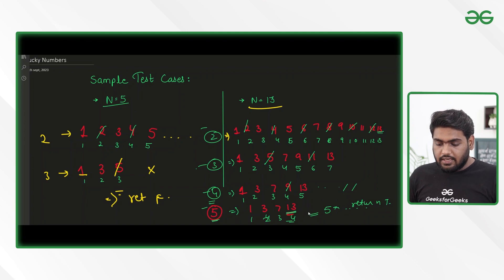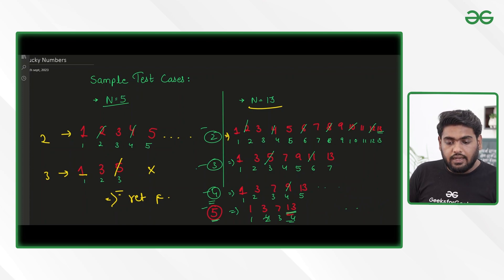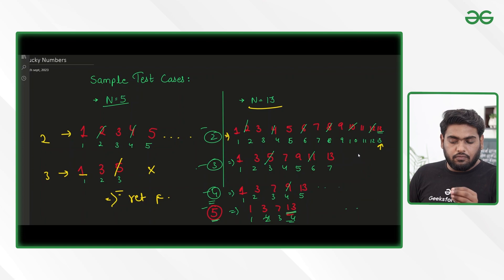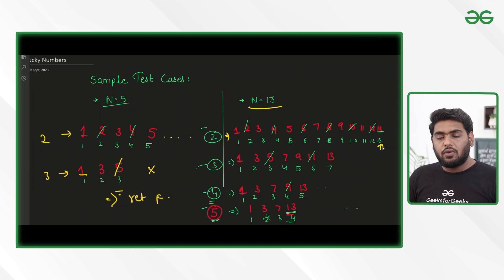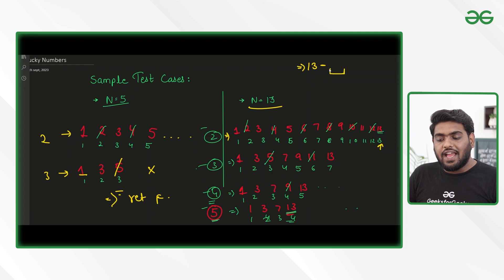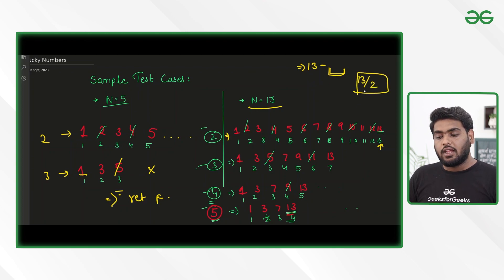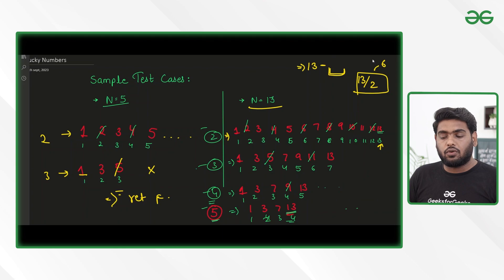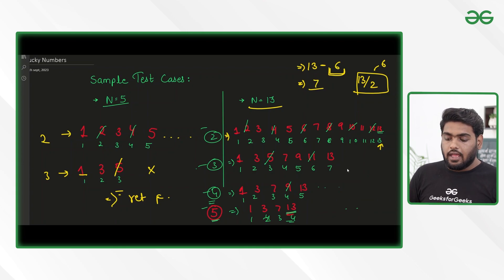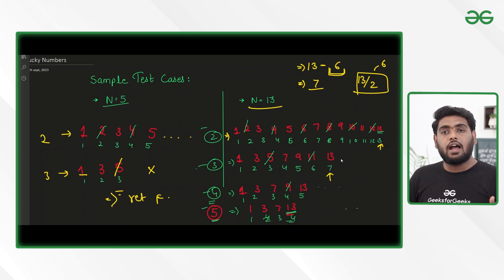Let's carefully observe how the indexes are working. 13 was at the 13th position. For the first time, we are reducing half of the numbers — that is floor of 13/2, which is 6. So 13 minus 6 equals 7, and 7 is actually the position 13 is going to lie at after the first pass. Once we are at the 7th position and reducing every third number, we do 7 minus floor(7/3), which gives 2, and 7 minus 2 gives 5. This is what the next pass position becomes.